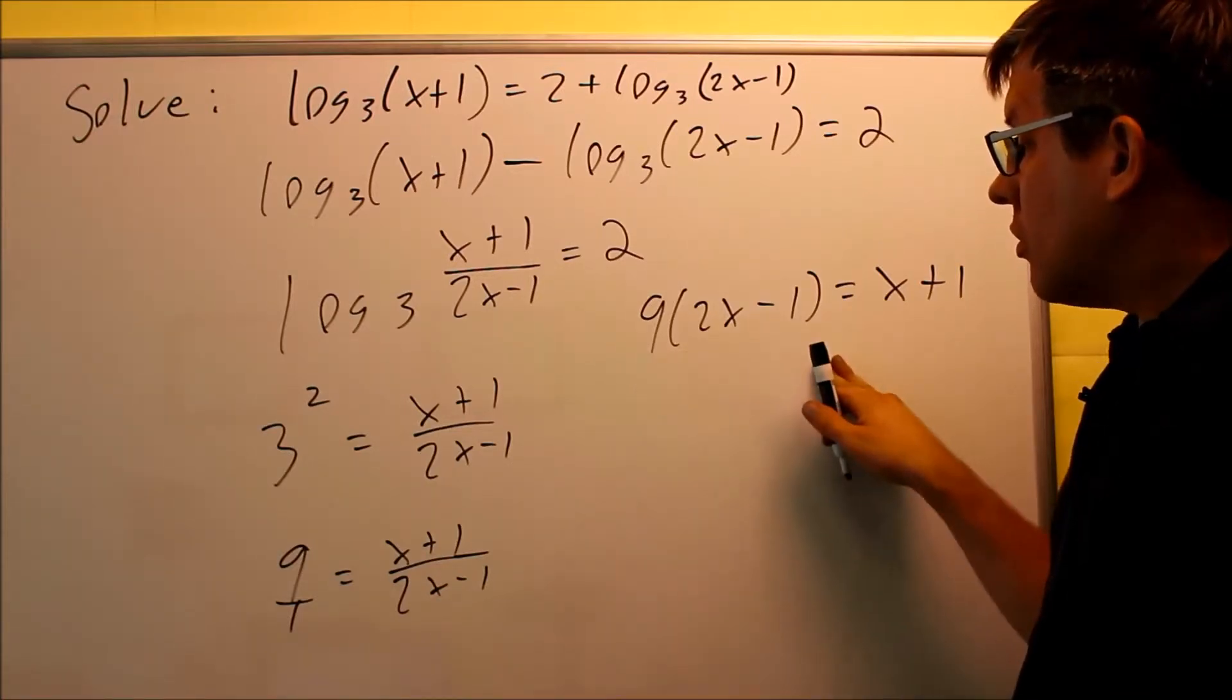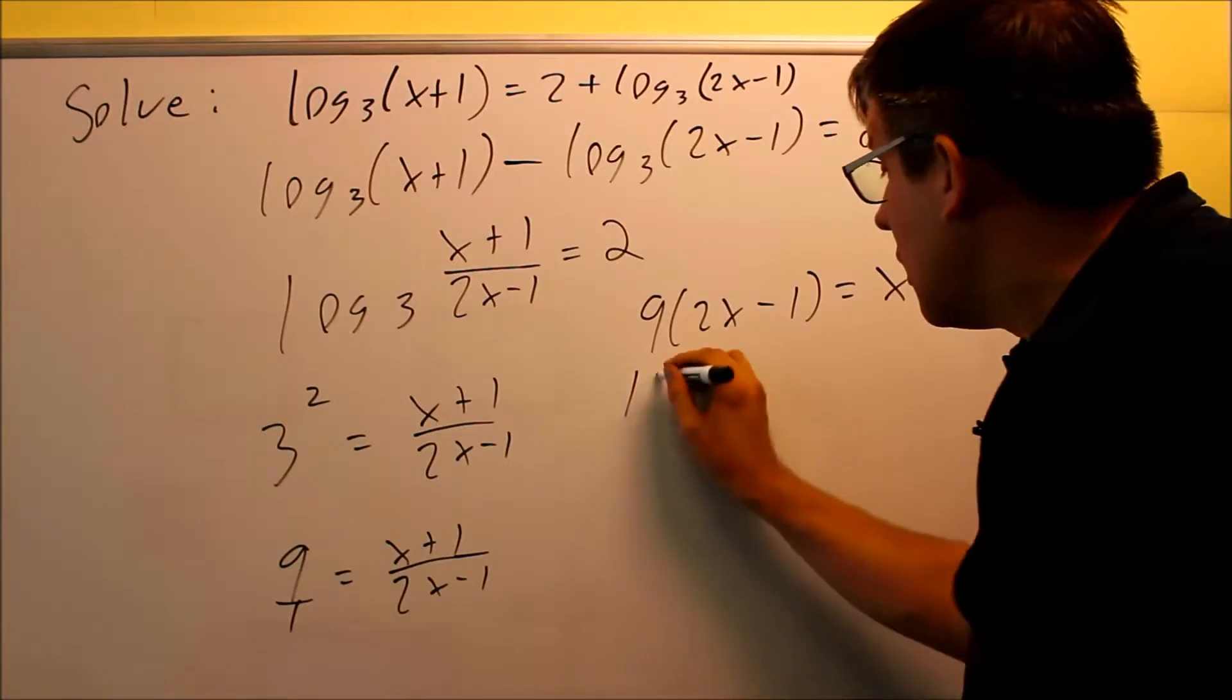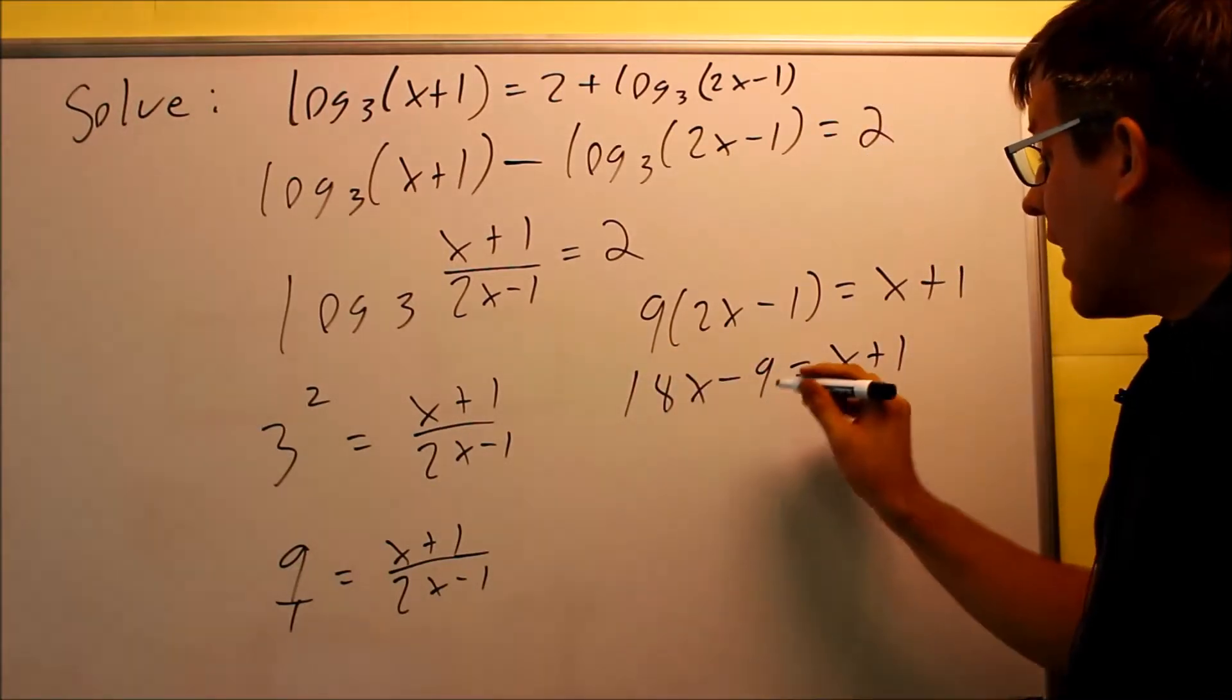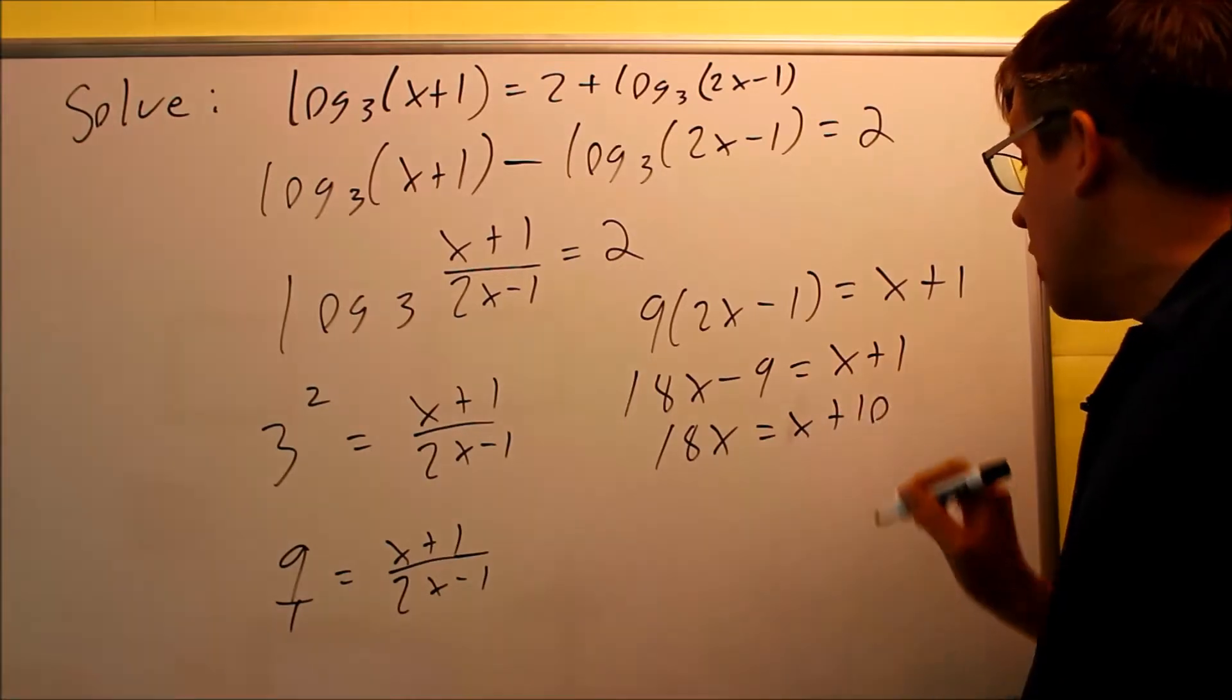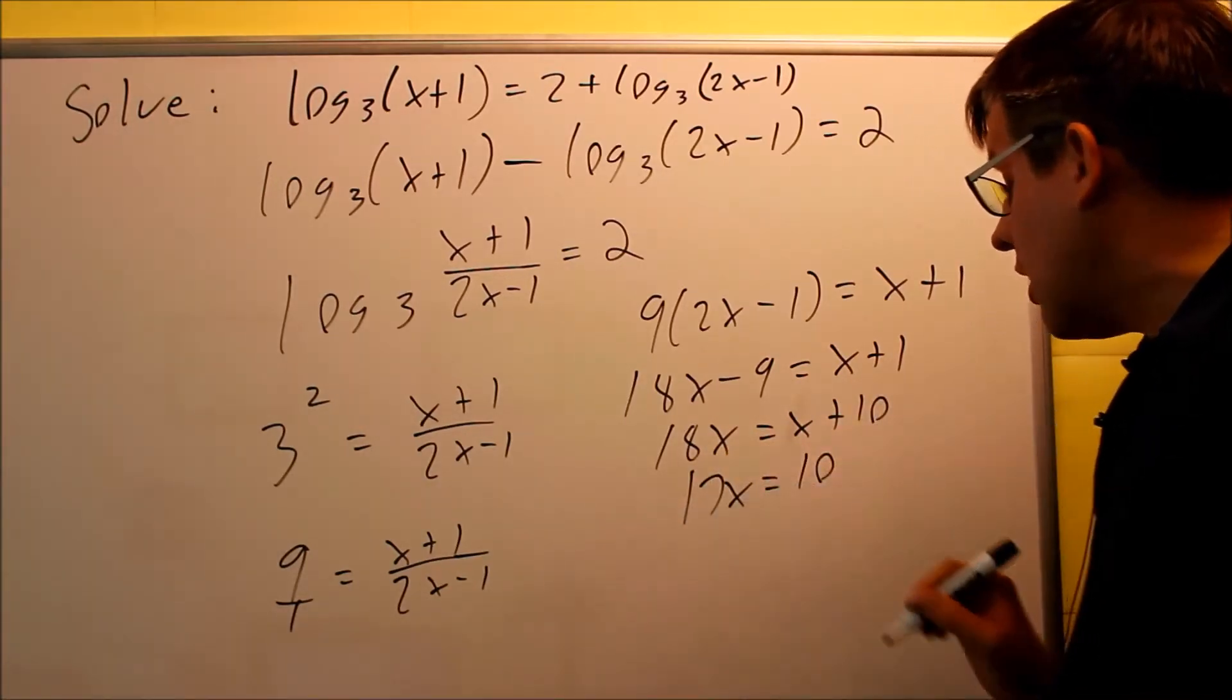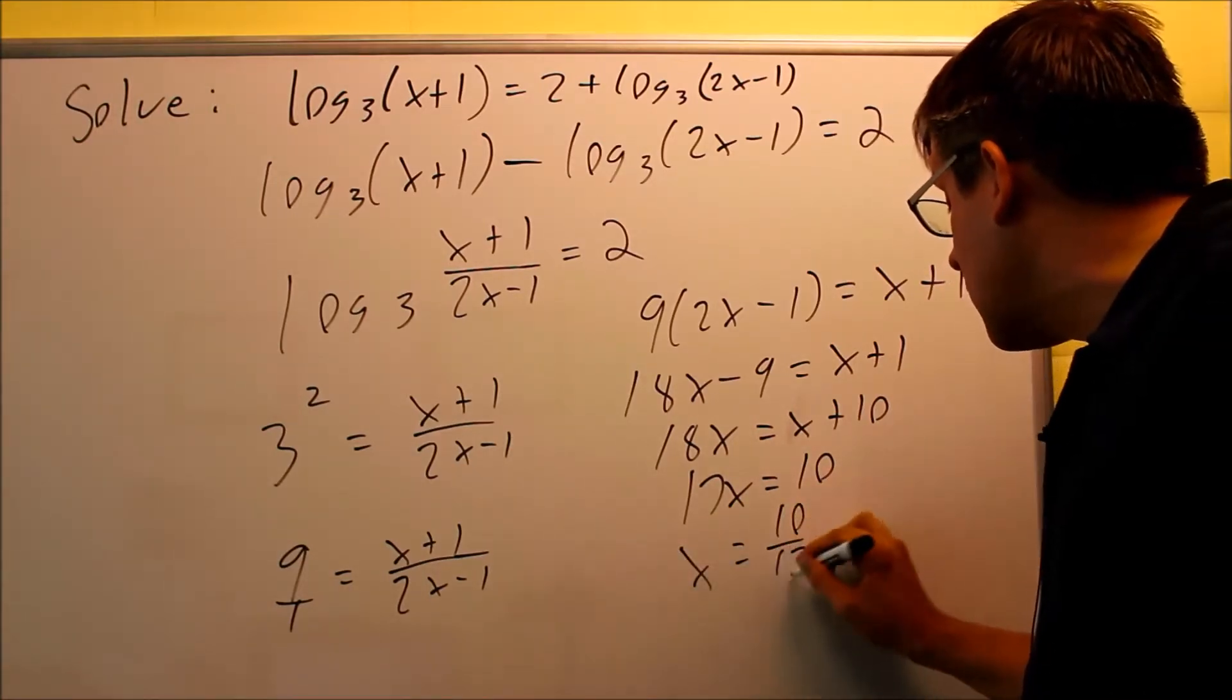You're going to want to distribute the 9, multiply that through because we need to solve this for x. 18x minus 9 is going to equal x plus 1. You're going to add 9 to both sides. So 18x is going to equal x plus 10. And then you're going to subtract x from both sides. You get 17x equals 10. Divide both sides by 17. You're going to get 10 seventeenths as your answer.